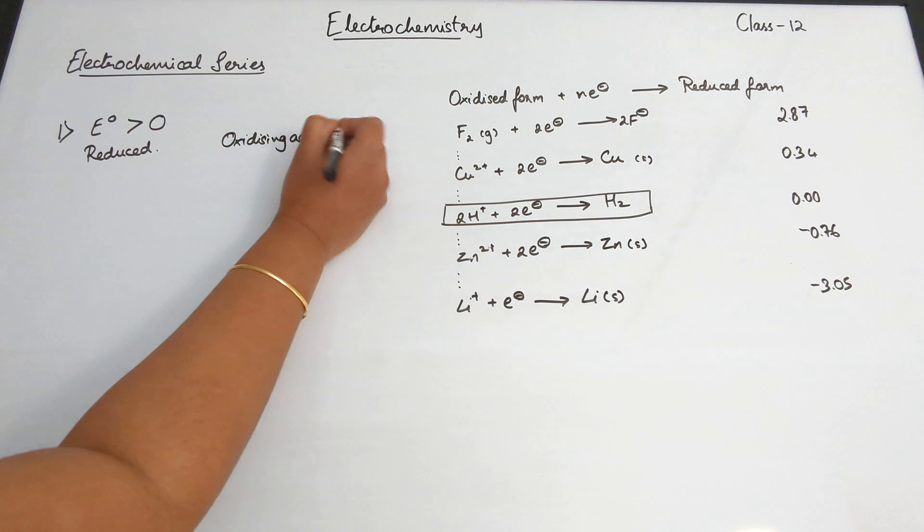The most important one in the center is the standard hydrogen electrode. The potential for the standard hydrogen electrode is zero, and all of the others are measured in comparison to the standard hydrogen electrode.